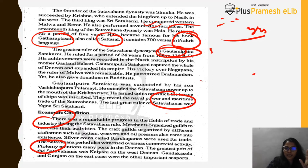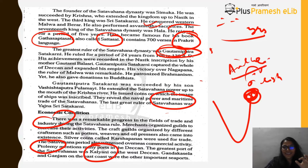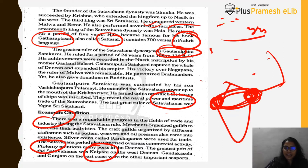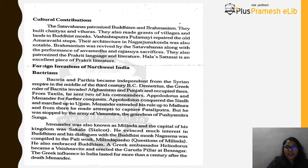The greatest port of the Satvahanas was Kalyani on the western side, while Ganjam was the port on the eastern side. Both were important sea ports. Culturally, the Satvahanas patronized both Buddhism and Brahmanism — they built chaityas and viharas for Buddhist monks and made grants of villages to support them.